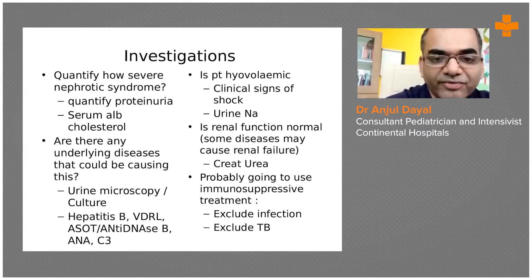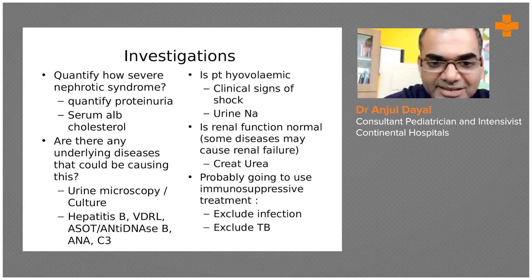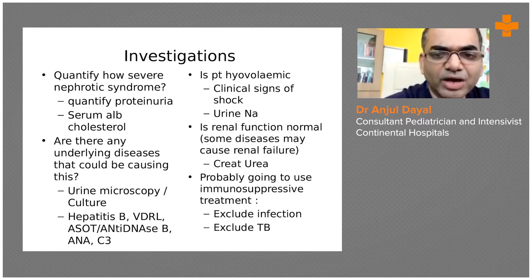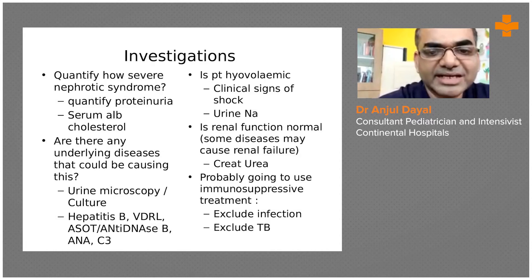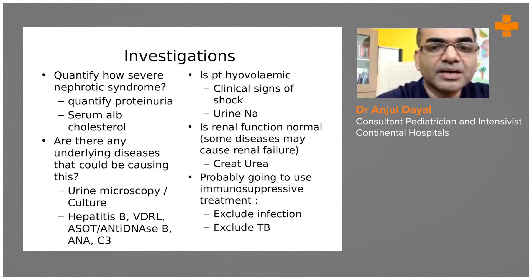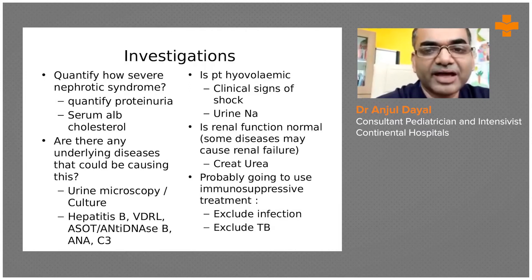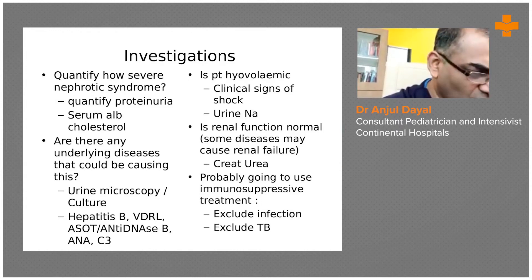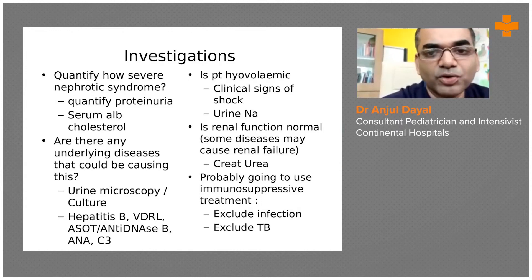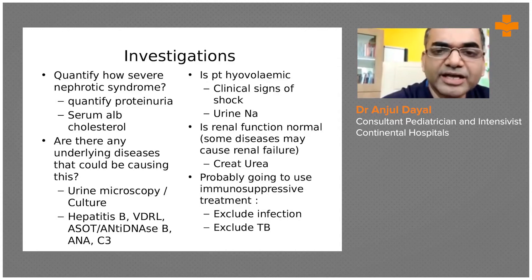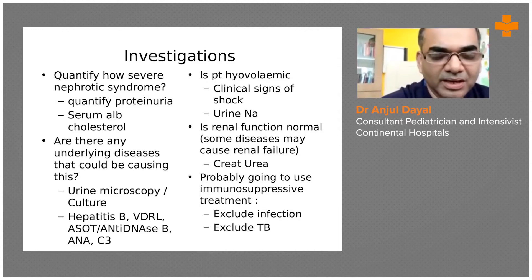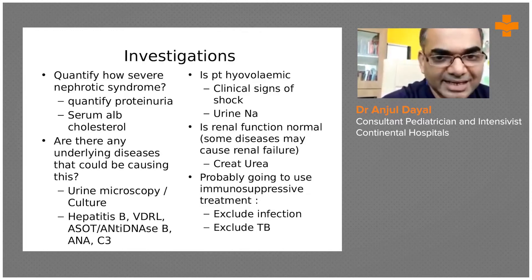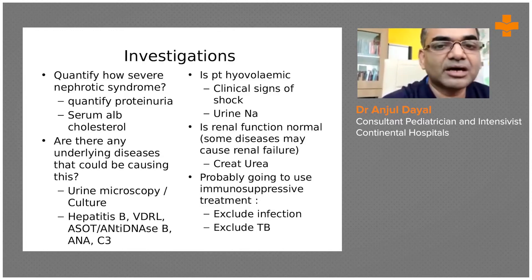We also do investigations to find out any underlying disease condition, such as urine microscopy — looking not just for proteinuria but also for hematuria. In case there is elevated hematuria, we have to think about FSGS, membranoproliferative, or membranous type of glomerulonephritis. We also look at complement levels — C3 and C4. In minimal change disease, complements are normal, whereas in membranoproliferative disease or autoimmune diseases like SLE, complement levels are on the lower side.